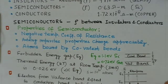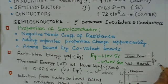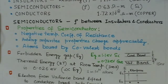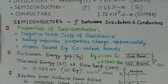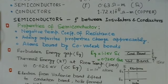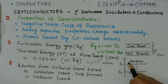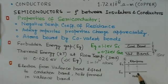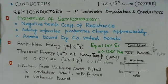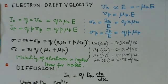In the case of insulators, the band gap can be up to 15 eV. When we move an electron from the valence band to the conduction band, the electron comes to the conduction band but leaves a hole in the valence band. So whenever an electron leaves the valence band, a hole is created in the valence band.